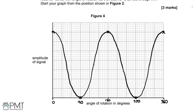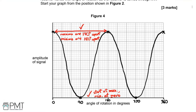For full marks: your first mark is for showing a maximum at the start and minima of zero. Your second mark is for having the correct periodicity — the maxima and minima are each 180 degrees apart: peaks at 0 and 180, and zero points at 90 and 270 degrees. Your third mark is for correctly drawing a curve rather than a zigzag or series of straight lines. Three marks there.